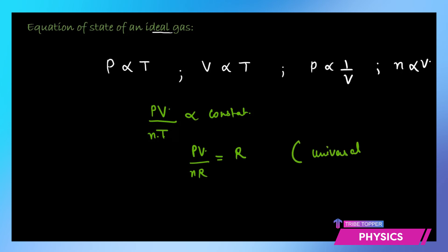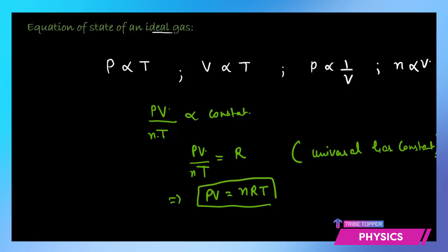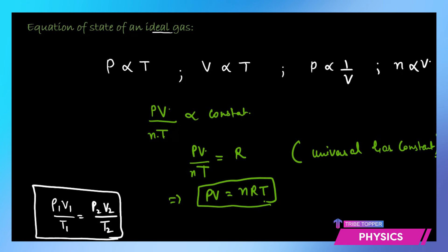We say that PV over nT equals the constant R, where R is called the universal gas constant. Its value will be given in the data booklet. Therefore PV = nRT. This is the equation of state of an ideal gas. When all variables are changing, you can also use p1·v1/t1 = p2·v2/t2. In some mathematical problems, out of these six quantities, five will be known and you must find the sixth.